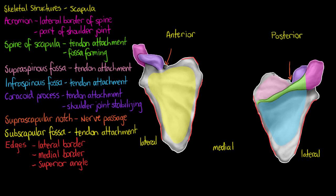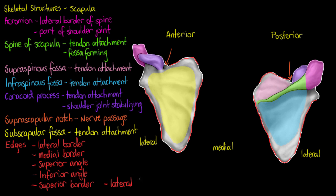We have the superior angle on the top, visible from both anterior and posterior views. We'll also have an inferior angle at the bottom, visible from both views as well. There's also a superior border, just below the superior angle, visible from the anterior view. The last is the lateral angle, which leads into our glenoid cavity.